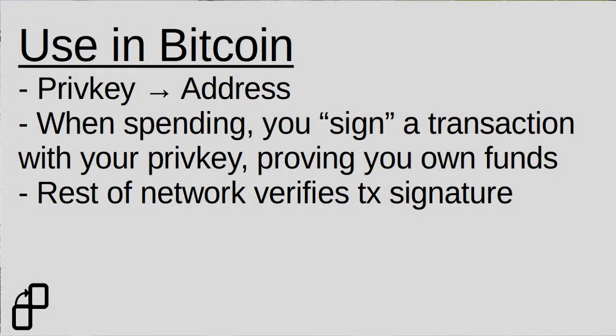Every Bitcoin address, which is sort of like an account for Bitcoin, starts with a randomly generated private key. In modern wallets, these are actually derived from a randomly generated seed phrase, and these serve as that secret elliptic curve key. The address is then derived using the elliptic curve algorithm through a public key and then some hashes. And you receive Bitcoin at this address.